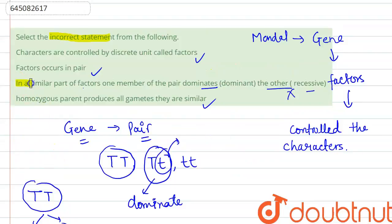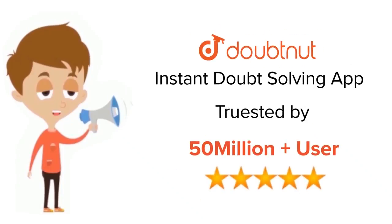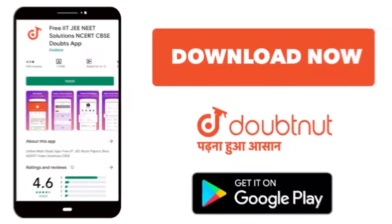So statement 4 is also correct. So the incorrect statement is option number C. I hope you can understand this explanation. Thanks for watching. For class 6 to 12, IIT JEE and NEET level, trusted by more than 5 crore students, download Doubtnut app today.